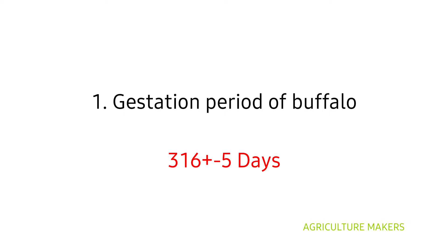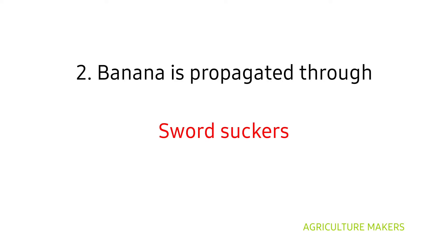Firstly, the gestation period of buffalo — it is 316 plus or minus 5 days. Banana is propagated through sword suckers. You have to keep in mind it is sword sucker. Options of water sucker or some other thing may be given, so you have to answer sword sucker.